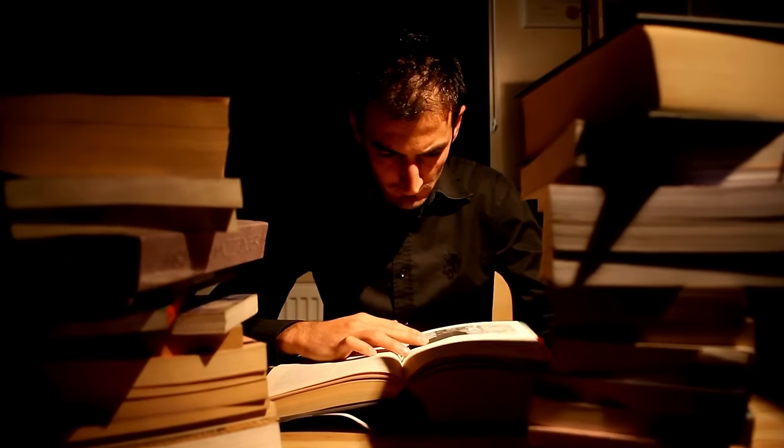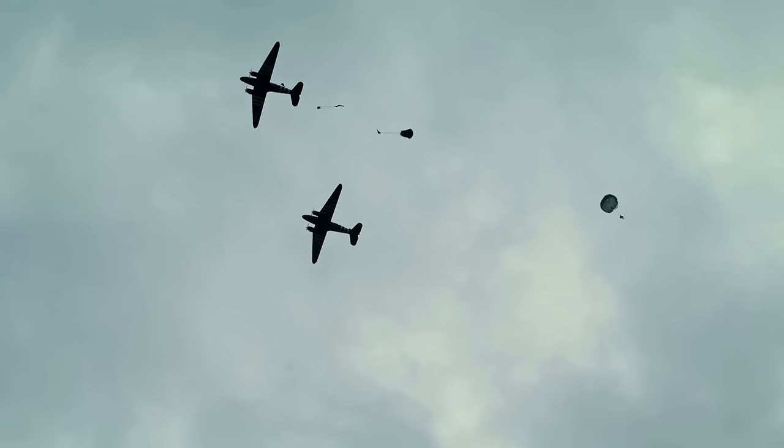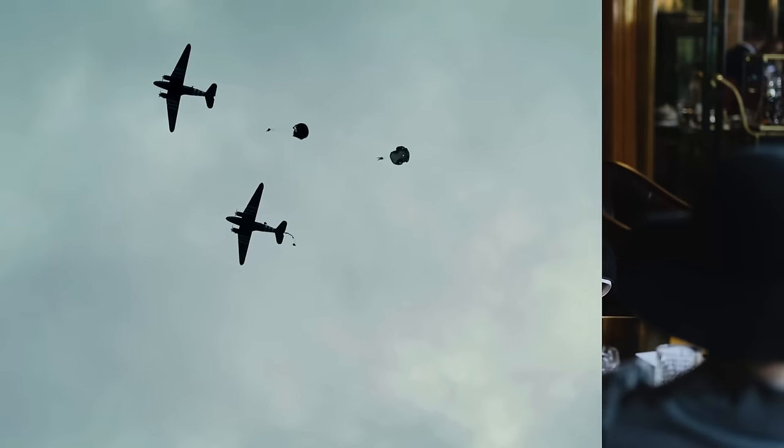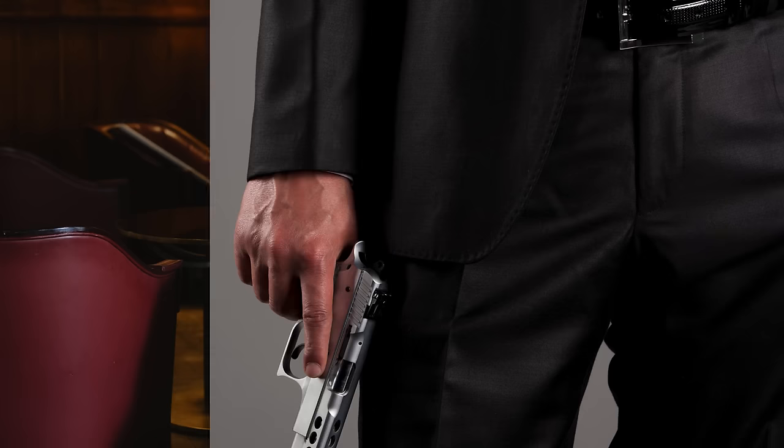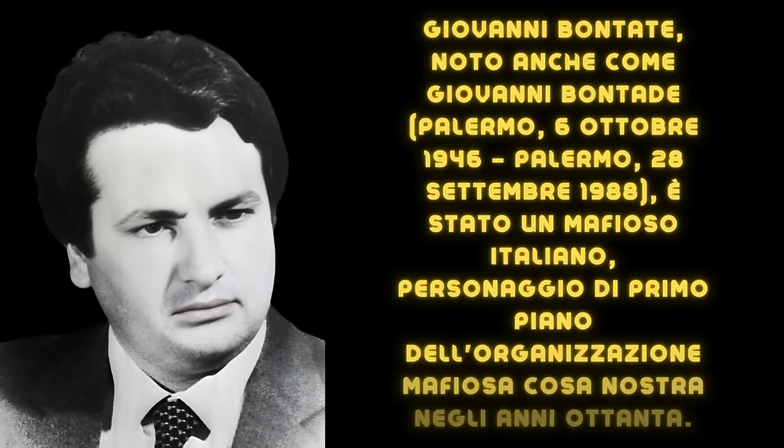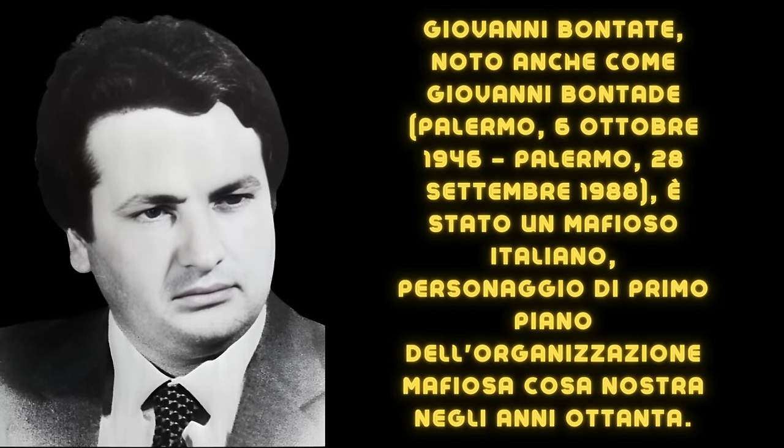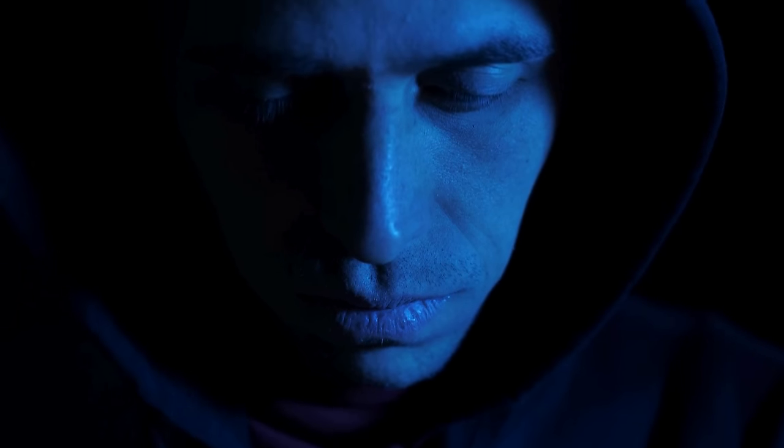Aglieri studied in a seminary in Monreale and subsequently served in the military as a paratrooper in the Folgore Brigade. He was affiliated with the mafia family of Santa Maria di Gesù and during the second mafia war allied with the Corleonesi along with his boss, Giovanni Bontate. In 1988, the Corleonesi ordered Aglieri to kill Bontate and rewarded him by appointing him head of the Santa Maria di Gesù family and district boss of the area.